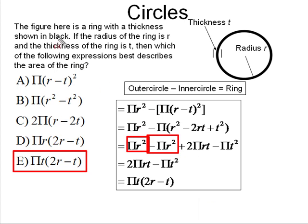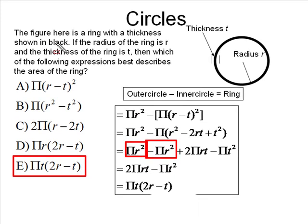So looking back, this is basically a word problem with a diagram, and you have to convert the word problem into an equation. So based on the diagram, you should definitely know this equation right here, in terms of words. The outer circle minus the inner circle equals the ring, because once you have that, it's easy to create the mathematical equation.